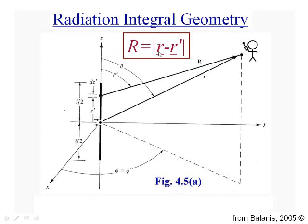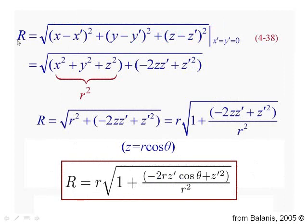R, in other words, is equal to the distance between the filament and the observer. The observer's location is at vector r. The filament's location is at vector r prime, and we integrate along the length of the wire. So let's take a look at this value of r and see what sort of approximations we might want to make with it.